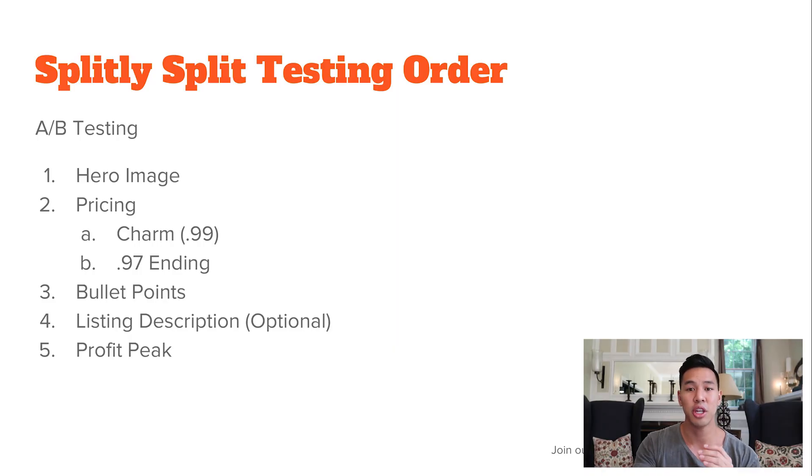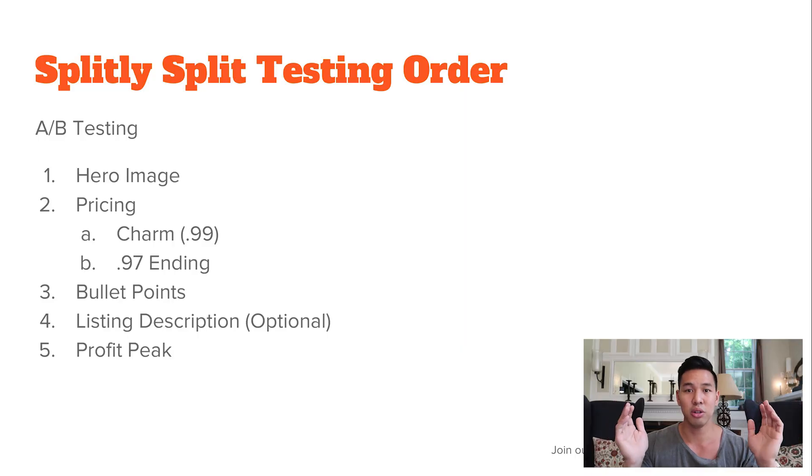I always test everything from most important to least important inside my listing, because you want to test the ones that have the most impact first. The first thing I test is the hero image — the main image that people see when they're browsing the Amazon search page. Keep in mind that all tests can take anywhere from one to four weeks, because they want statistical confirmation and they really want to confirm this is the winner and it's not just due to holiday fluctuations or something random. Split testing is a slow and steady process, but it pays off really well.